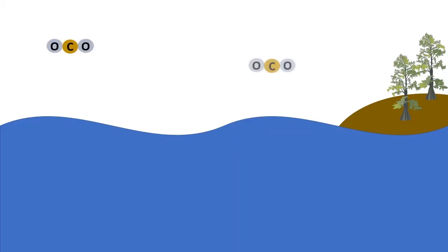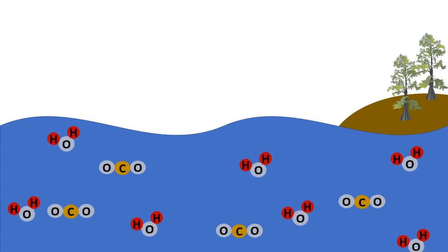Picture the air outside with a lot of carbon dioxide molecules in it. The ocean is going to dissolve the carbon dioxide from the atmosphere. In the ocean, carbon dioxide is hanging around water molecules. Carbon dioxide can react with water to form carbonic acid.